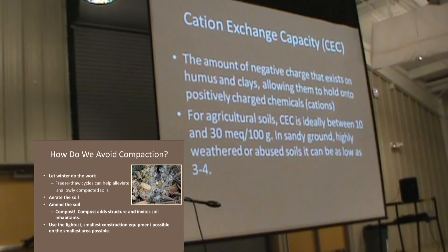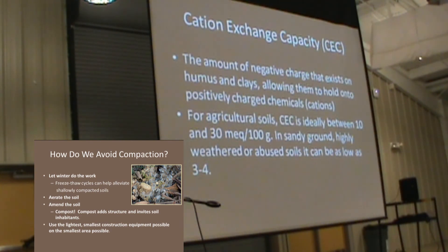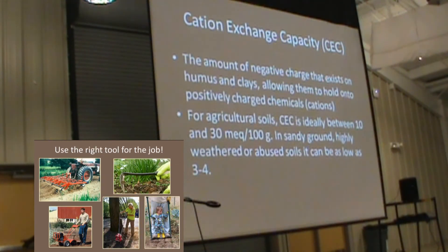This is cation exchange capacity — the amount of negative charge that exists in humus and clays. Clays are also negatively charged, which allows them to hold on to those positively charged nutrient ions. The number you're looking for when your CEC is measured is going to be somewhere between 10 and 30. A lot of people look at their CEC when working in greenhouses with non-soil-based potting mixes — with plants like poinsettias, pansies, and mums that need rapid nutrient turnaround. If you have a deficiency or toxicity, you want to know your cation exchange capacity so you can tell if it's something you can adjust.